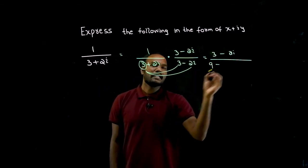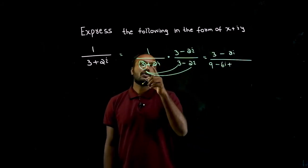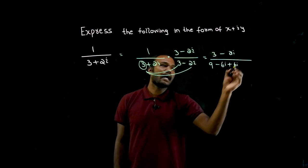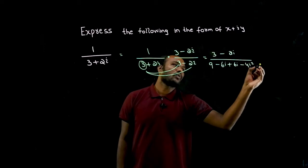Plus into minus is minus, 3 into 2 is 6i. Again plus into plus is plus, 2 into 3 is 6i. Again plus into minus is minus, 2 into 2 is 4i square.